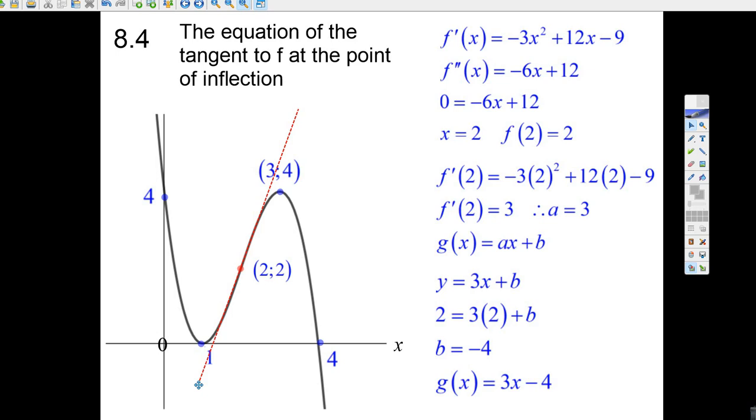We subtract 6 from 2. We get b equals minus 4. So the equation of the tangent line right there at 2, I even drew it in here, a nice little red dotted line here. That's what it would look like. The equation is 3x. g of x equals 3x minus 4.